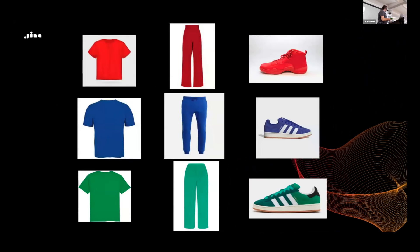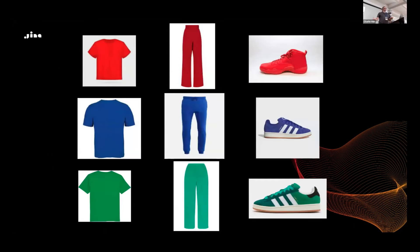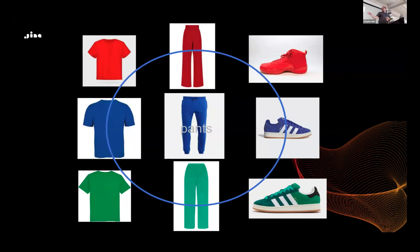Looking at nine products we want to search, which query set is harder? On the left: red, blue, green shoe, t-shirt, and pants. On the right: nine queries that map exactly one-to-one to the products, longer and compounded. The right-hand side is much easier in 2D because we can map every single query exactly to the product. But the left-hand side is much harder — if we map 'pants,' we always get shoes or t-shirts in the way. When we move the shoes and t-shirts, the blue queries break. You cannot rearrange to make this work.